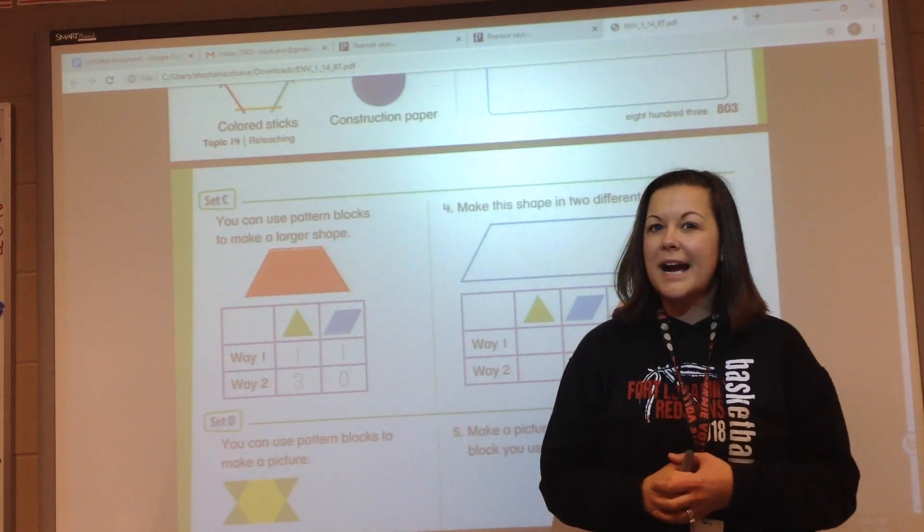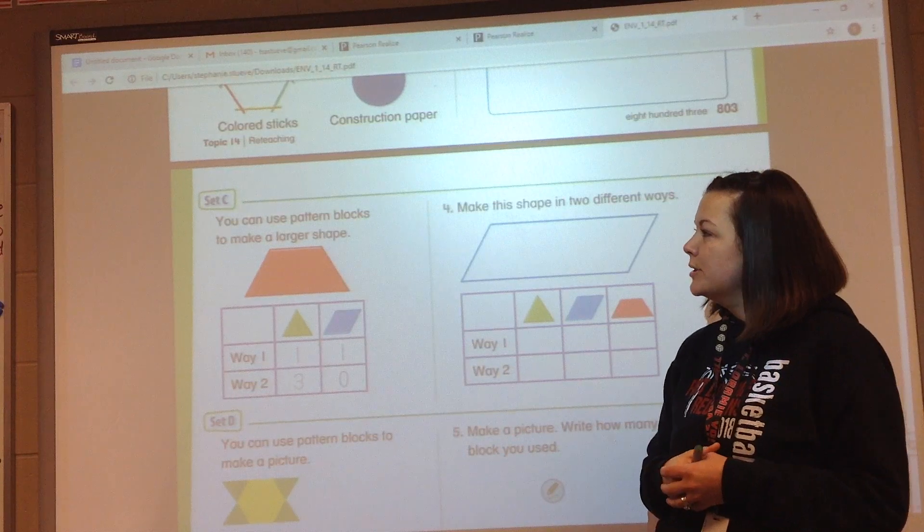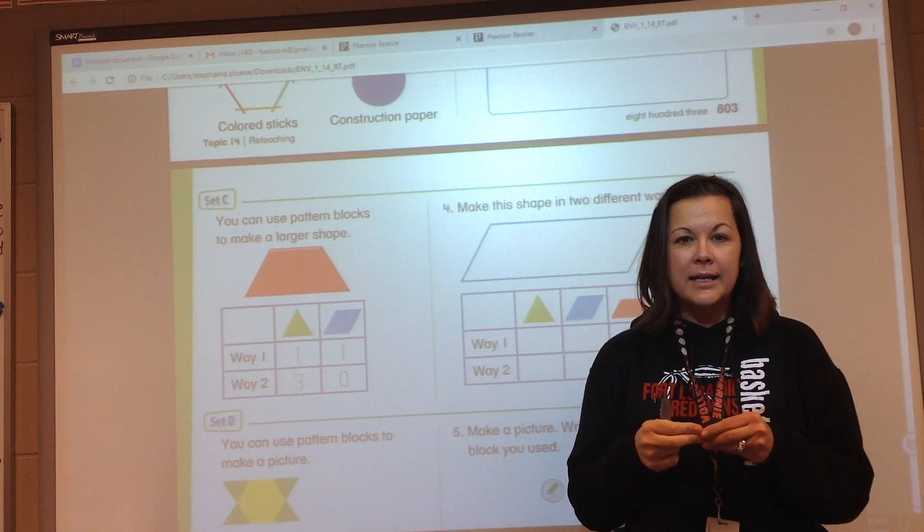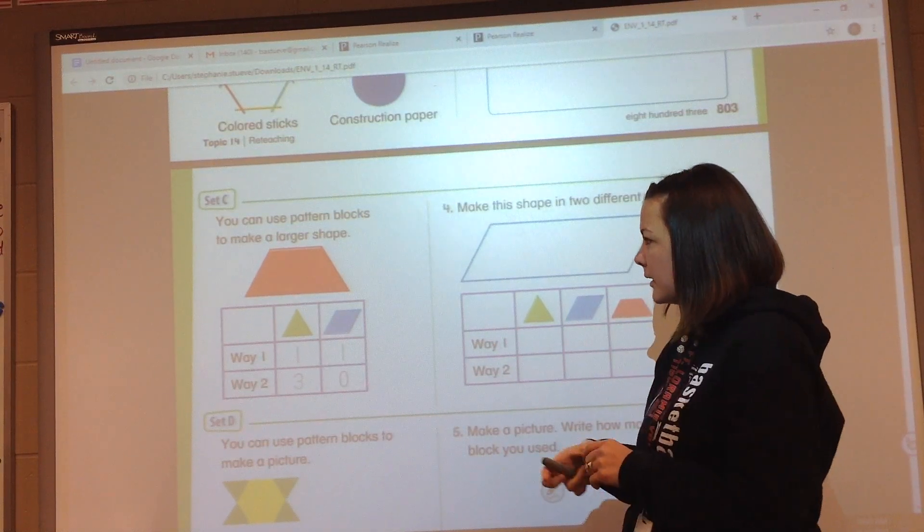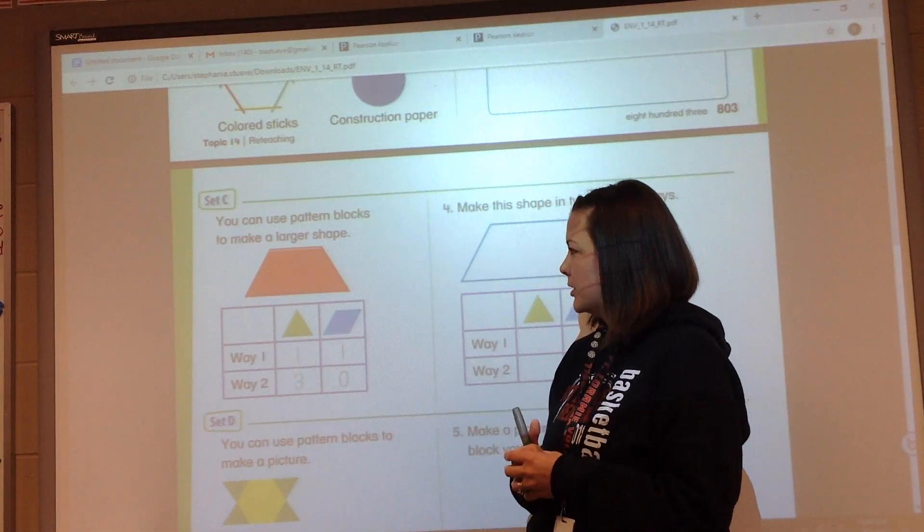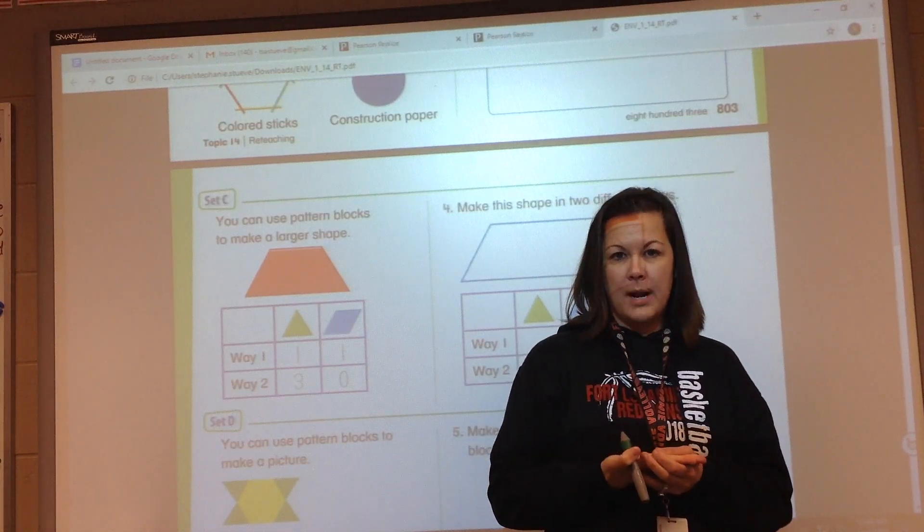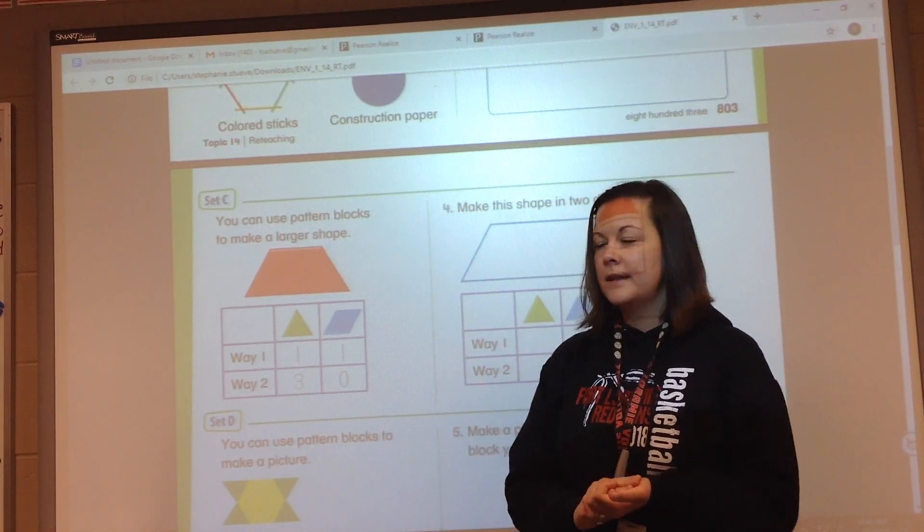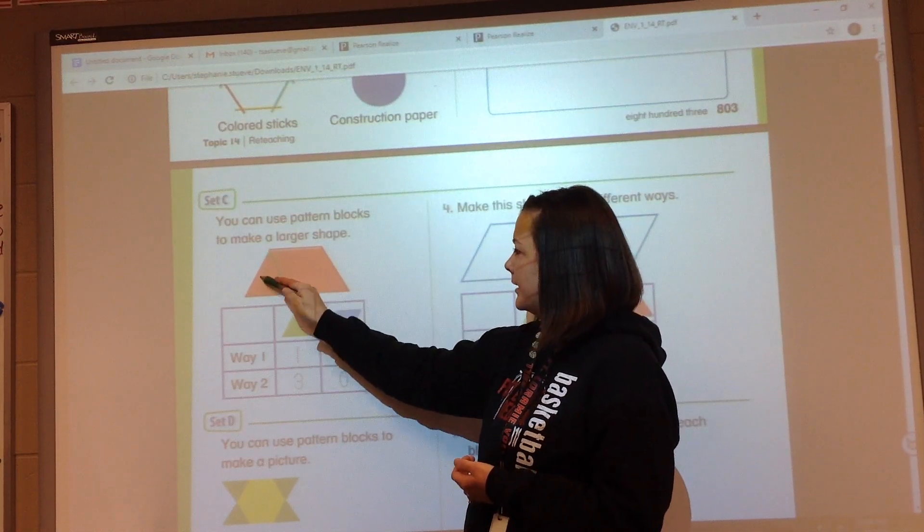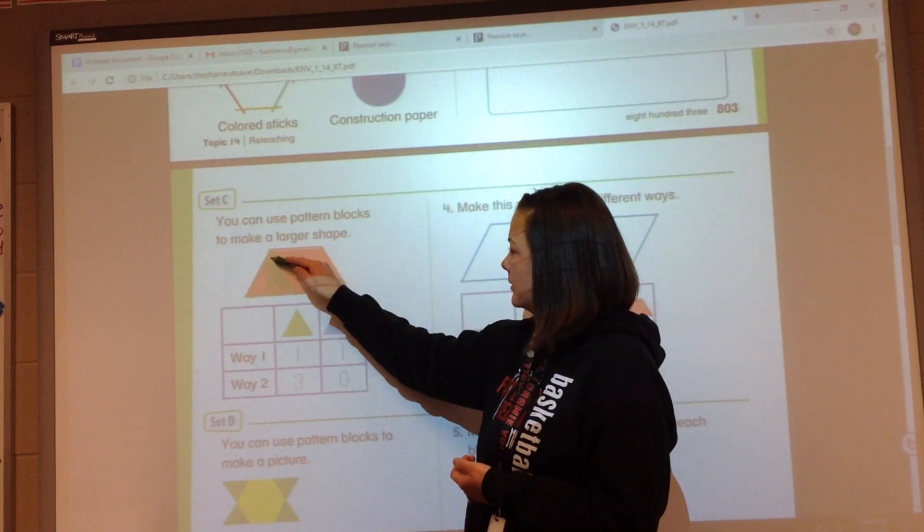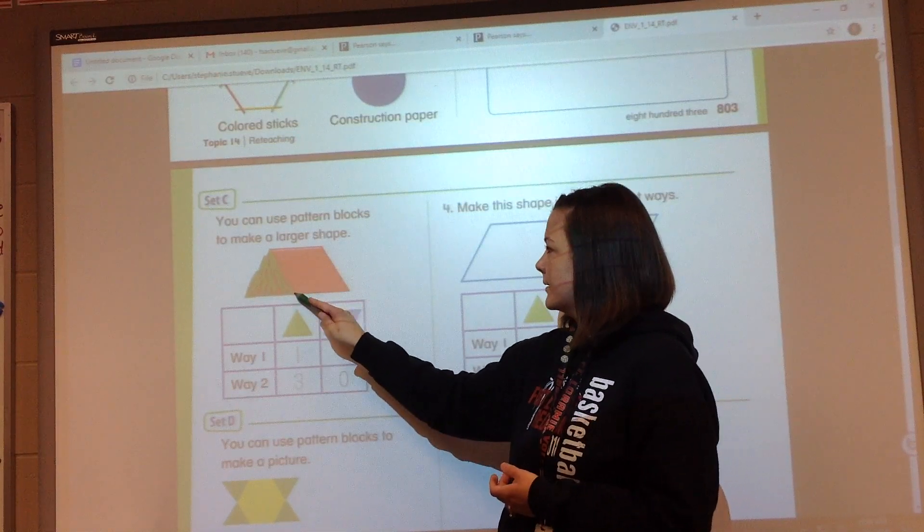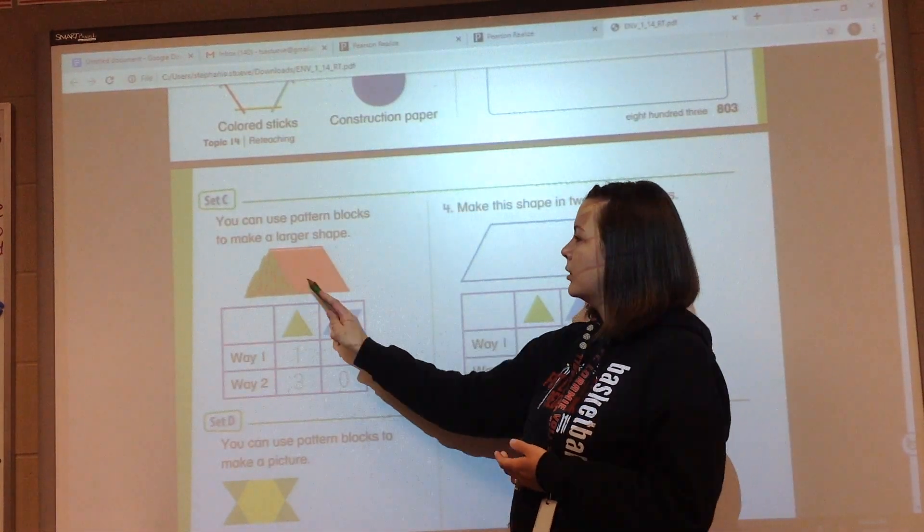All right, welcome back. We are working in Set C. It says use the pattern blocks to make larger shapes. This is where you're going to need your little baggie of shapes that we provided for you. Here we have a trapezoid and one way that you can make a trapezoid. I want you to get out your red trapezoid, lay that flat on the table. One way you can use it is by, right here would be a triangle. One triangle and then your rhombus. So we use one triangle, one rhombus.